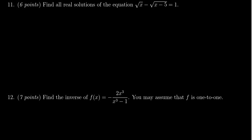In this video, we provide the solution to question number 11 from practice exam number three for Math 1050. We have the radical equation: the square root of x minus the square root of 5 minus x is equal to 1.